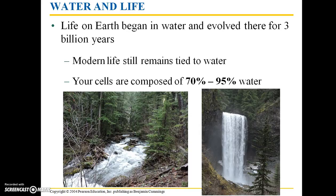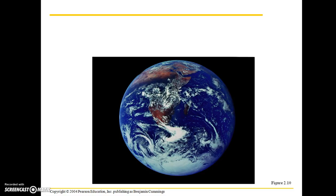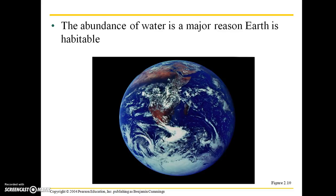Our own cells are composed of 70% to 95% water, depending on what type of cell it is. The abundance of water is a major reason Earth is habitable. You've probably heard of the search for extraterrestrial life. It sounds much more exciting than it often is in reality. What most people are looking for when they're looking for life is simply liquid water. If there's liquid water, life as we know it may be there as well.